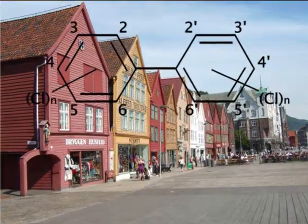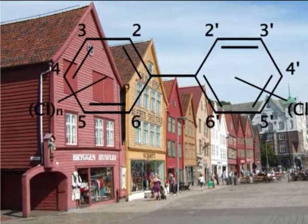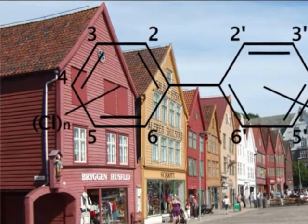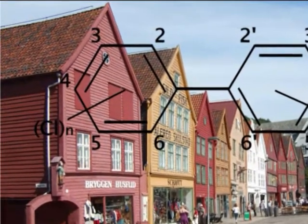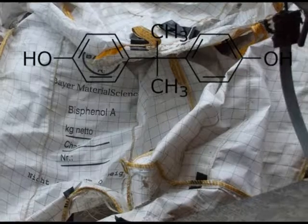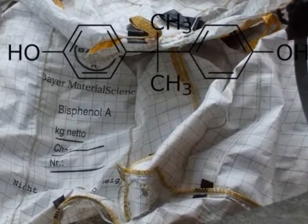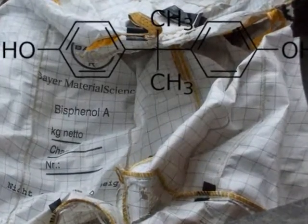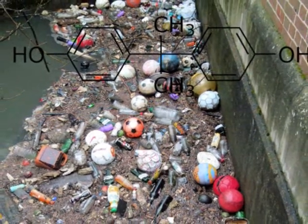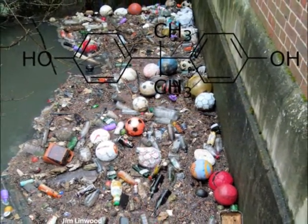Another hazardous pollutant is polychlorinated biphenyls, or PCBs, which can come from old paint, electric transformers, and old waste. Bisphenol A is an abundantly present chemical that can mimic hormonal processes in humans and fish. It is commonly associated with plastic and plastic residues.